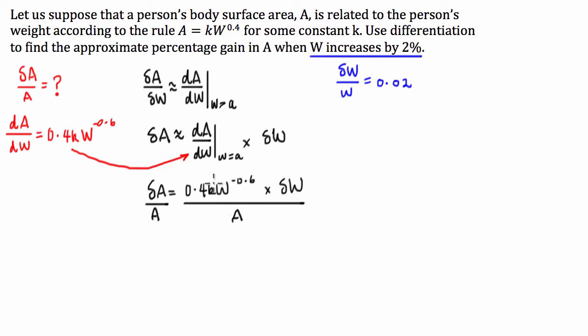So what we can do is it's in terms of W and A at the moment, so what I'm going to do is we know that A is equal to kW to the 0.4, so I'm going to replace that with kW to the 0.4. So on the top, I've got 0.4kW to the negative 0.6 times by delta W, all divided by kW to the 0.4.